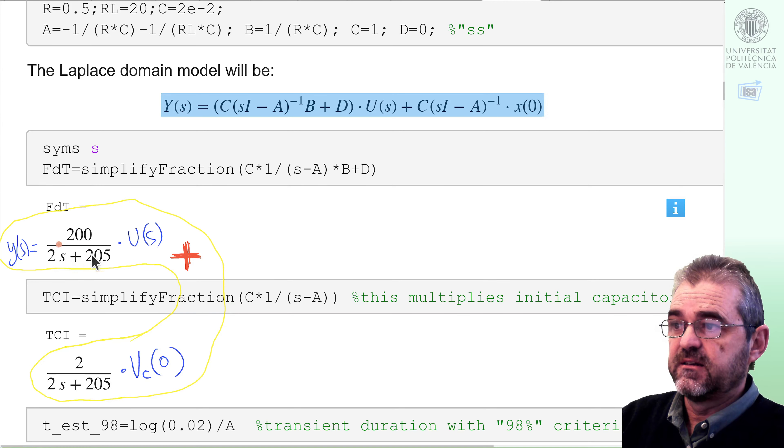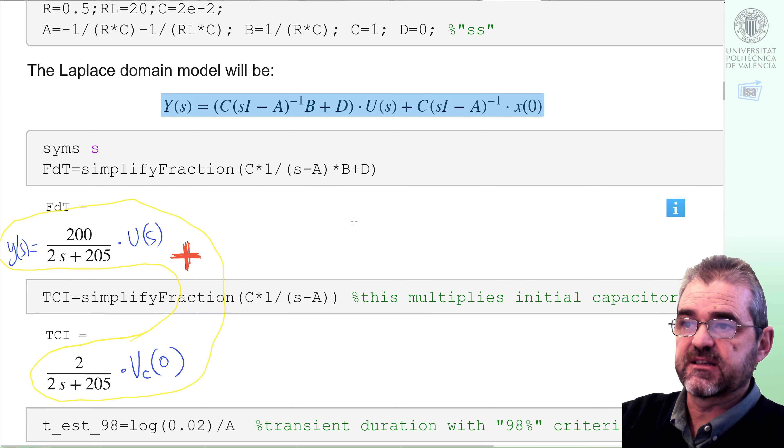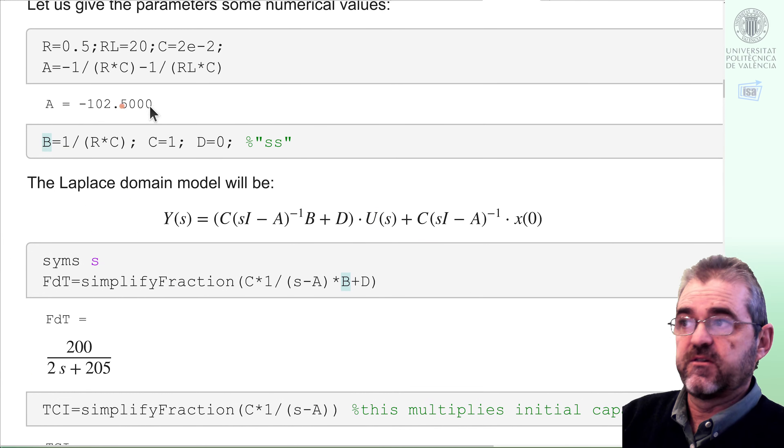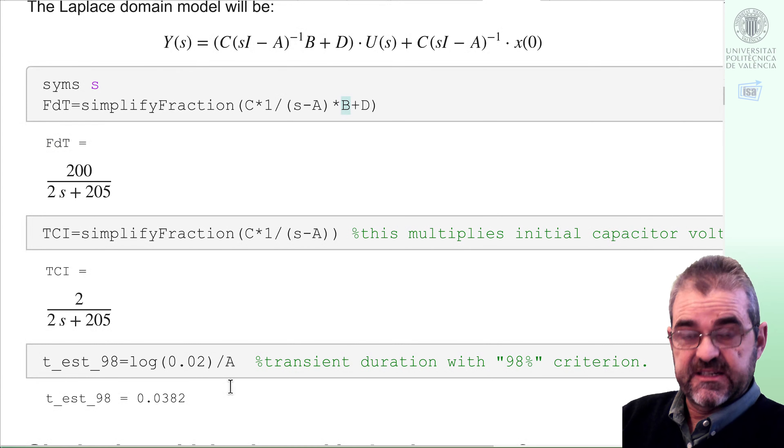MATLAB is kind of silly and writes the denominator as 2s plus something, but usually we are more accustomed to seeing it as, let's say, 100 over s plus 102. Anyway, it's the same. So, the pole is in minus 102, and for instance, that's the value of the A matrix, one by one, in the state space representation. So, this is it.